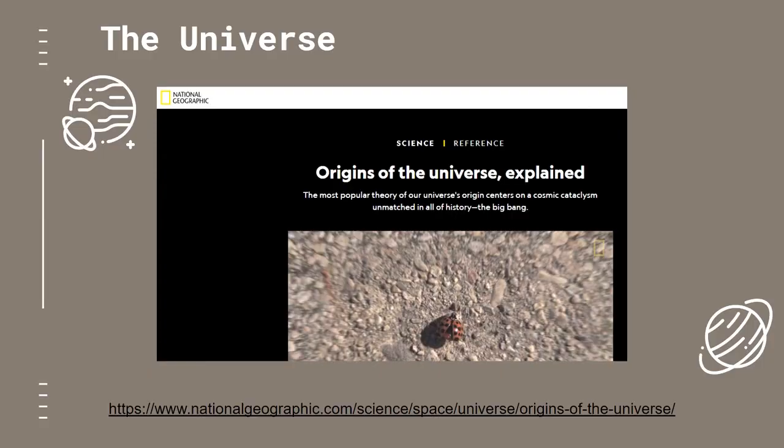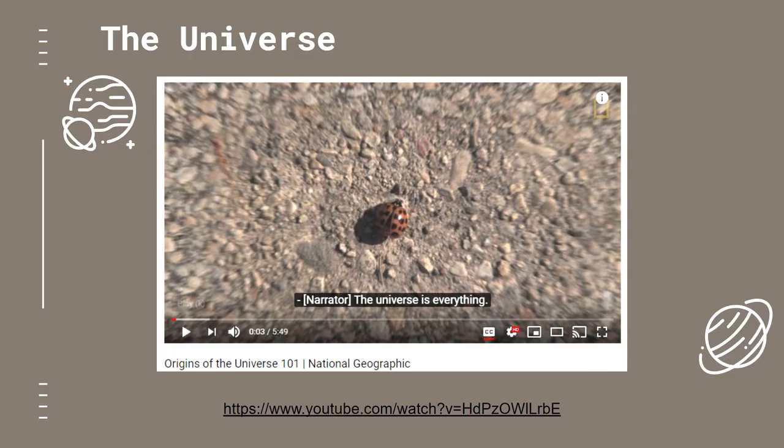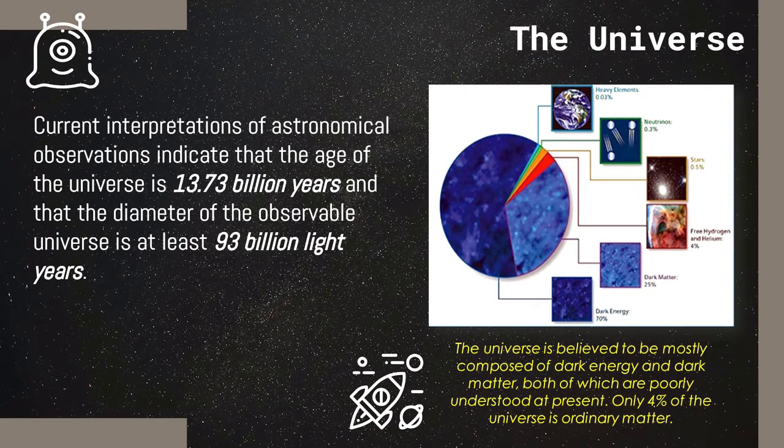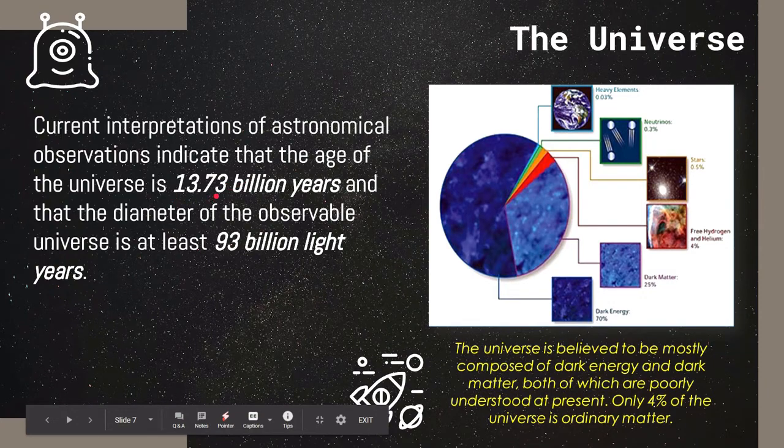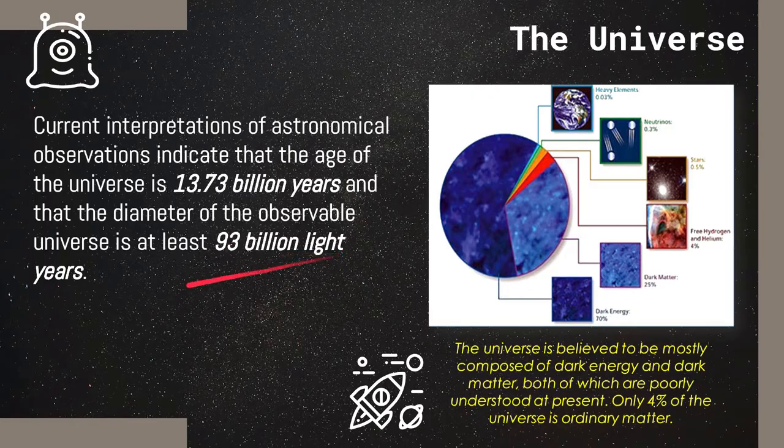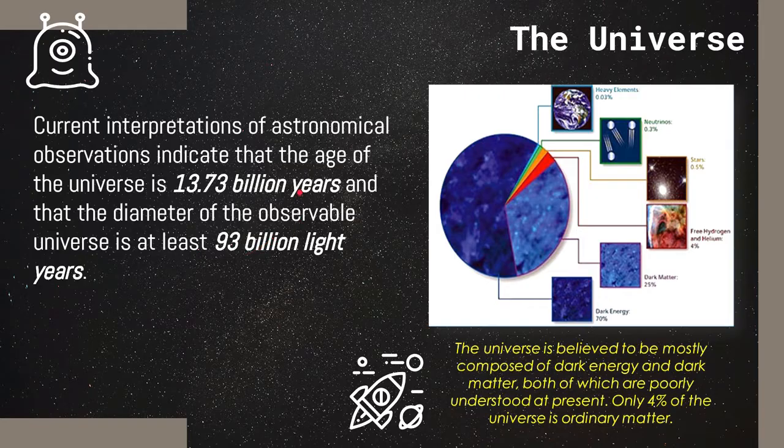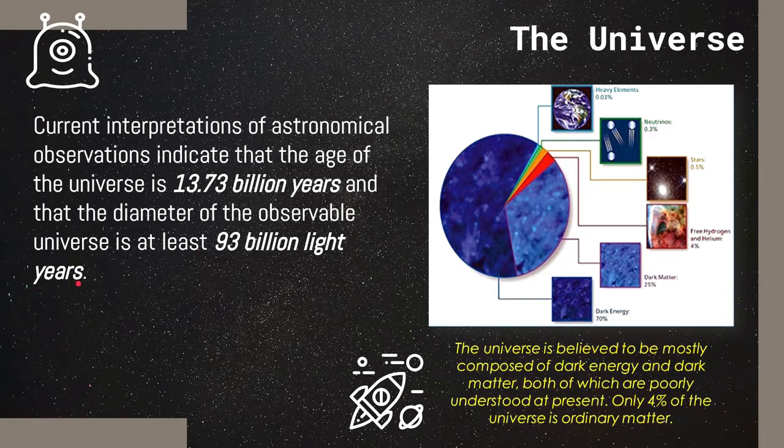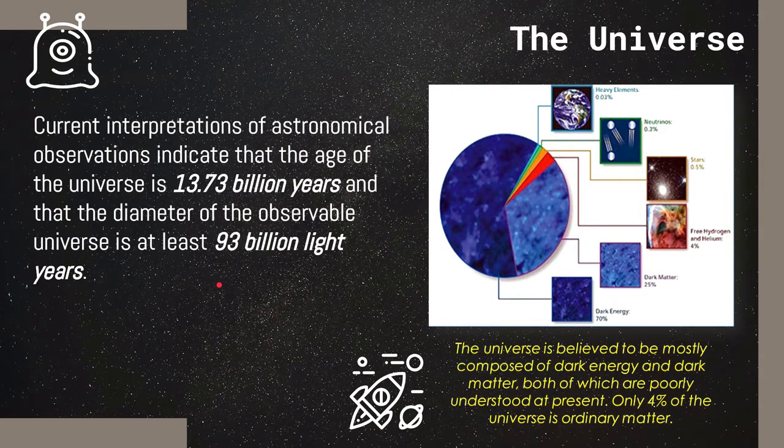I recommend that you visit this website from National Geographic and this video from their YouTube channel, Origins of the Universe 101. I will provide the links to the website and video in the description below. The current interpretations of astronomical observations tells us that the age of the universe is around 13.73 billion years and that the diameter of the observable universe is at least 93 billion light years.